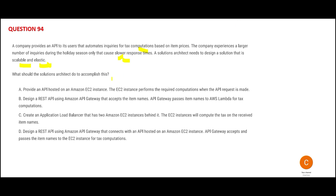Let us look at the options. Option A says put the API on EC2 and let EC2 perform the computation when the request is made. The problem here is that if EC2 has to create and maintain the APIs, it is not a service that is born for that.